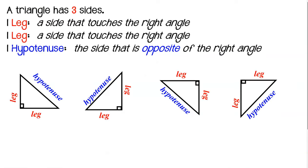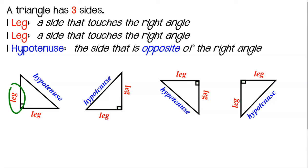No matter which way your triangle is facing, wherever the right angle is, the hypotenuse will be diagonally away from it, and the legs will always be touching it.